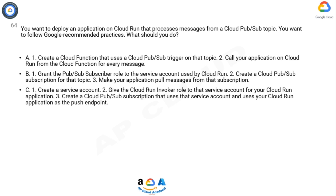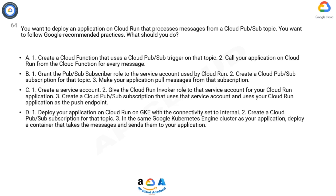Option C: 1) Create a service account. 2) Give the Cloud Run Invoker role to that service account for your Cloud Run application. 3) Create a Cloud Pub/Sub subscription that uses that service account and uses your Cloud Run application as the push endpoint.